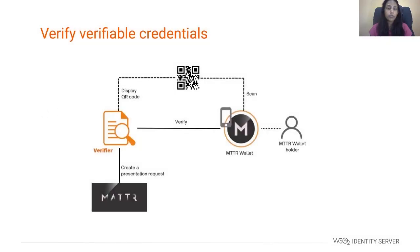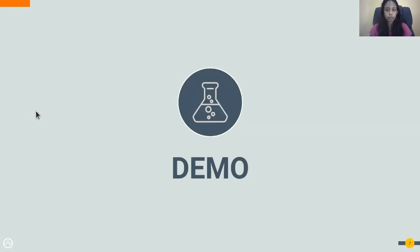Moving to the verification flow. Here, the verifier requires verified credentials from the user who holds the credentials in their mobile wallet. The verifier is required to create a presentation request and generate a QR code based on it, so the user can view the request and respond with the verifiable presentation.